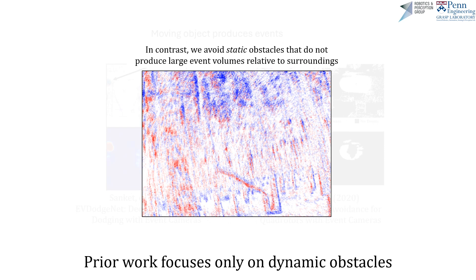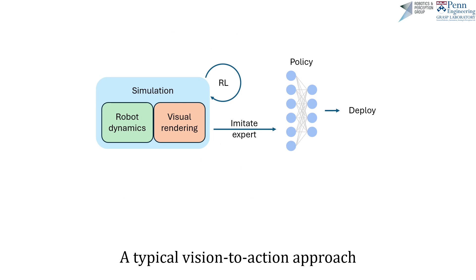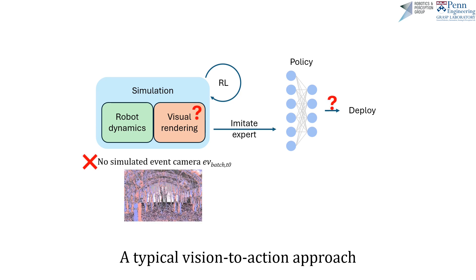This is the first work accomplishing continuous robot navigation purely from events under fast flight. A typical vision-to-action learned approach may use a simulator to execute an RL training scheme or imitate a privileged expert, but this does not work when we don't have a simulated event camera available to us.